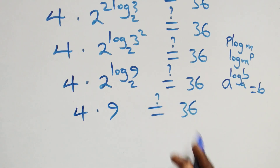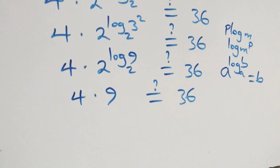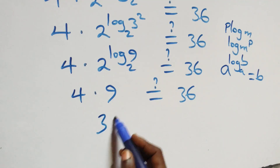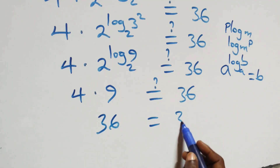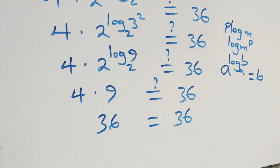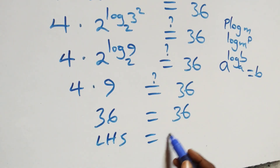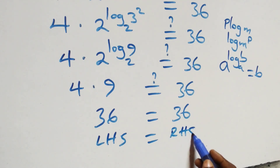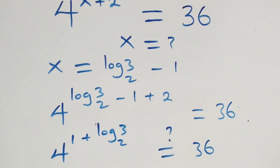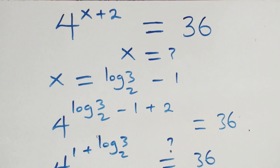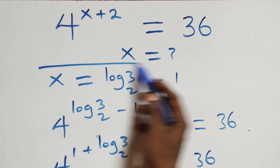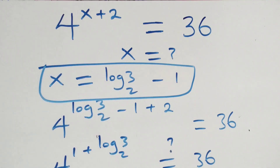4 times 9 gives us 36, which equals 36 on the right-hand side. The left-hand side equals the right-hand side, so we conclude that x equals log base 2 of 3 minus 1 satisfies this given problem. Thank you for watching — don't forget to subscribe for more videos.